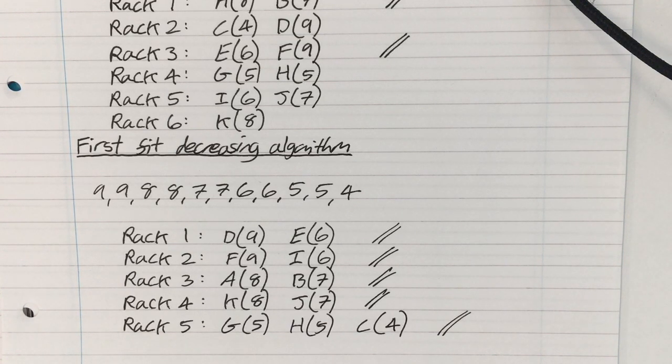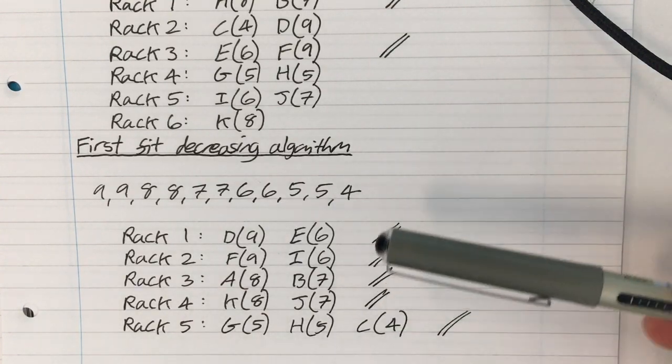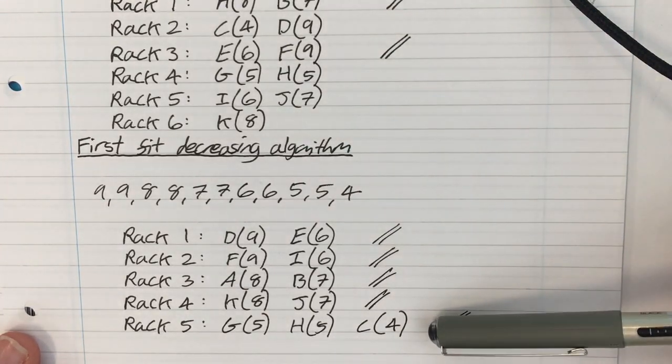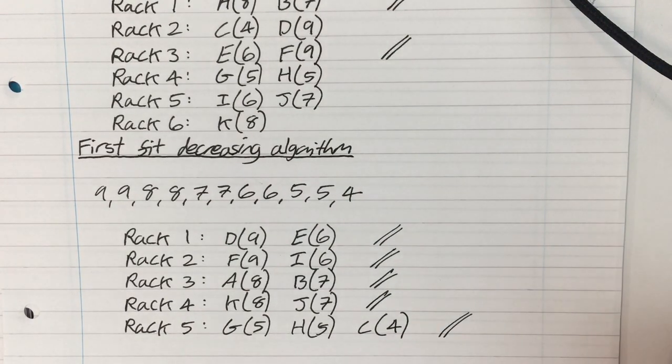And we can see that first fit decreasing has given a better solution in this case than the first fit algorithm. Because the first fit used 6 racks, and the first fit decreasing has used 5. Are you happy with that?